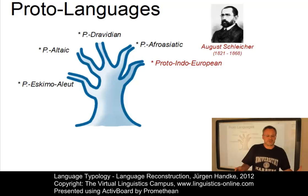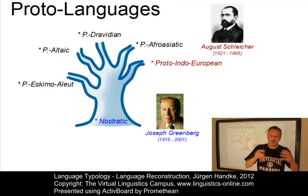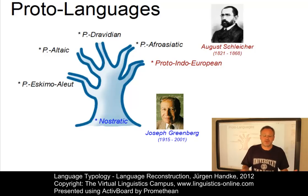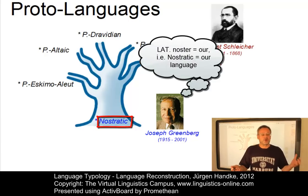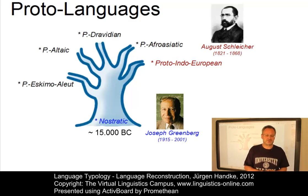Some linguists, among them Joseph Greenberg and a number of Russian linguists, discerned similarities among these proto-languages — such as Indo-European, Afro-Asiatic, and the others — and postulated a common ancestor to all these languages, which he called Nostratic. The Nostratic hunter-gatherers would have occupied all of Europe, Northern Africa, and large parts of Asia from an origin in the Middle East, perhaps around 15,000 years before Christ. Yet all this is still very speculative.